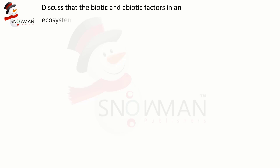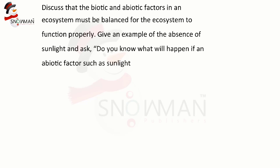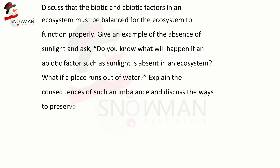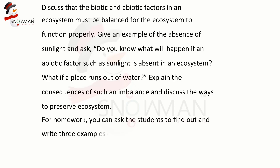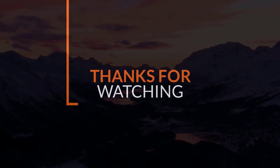Discuss that the biotic and abiotic factors in an ecosystem must be balanced for the ecosystem to function properly. Give an example of the absence of sunlight and ask: do you know what will happen if an abiotic factor such as sunlight is absent in an ecosystem? What if a place runs out of water? Explain the consequences of such an imbalance and discuss other ways to preserve ecosystems. For homework, ask the students to find out and write three examples of herbivores, carnivores, and omnivores in their notebook. Thank you, honorable teacher, for your listening. Allah Hafiz.